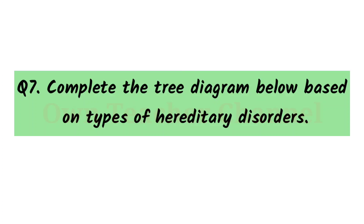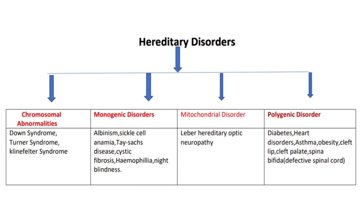Question 7: Complete the tree diagram based on types of hereditary disorders. Hereditary disorders include: one, chromosomal abnormalities — Down syndrome, Turner syndrome, Klinefelter syndrome; two, monogenic disorders — albinism, sickle cell anemia, Tay-Sachs disease, cystic fibrosis, haemophilia, night blindness; three, mitochondrial disorders — Leber's hereditary optic neuropathy; four, polygenic disorders — diabetes, blood pressure, heart disorders, asthma, obesity, cleft lip and cleft palate.